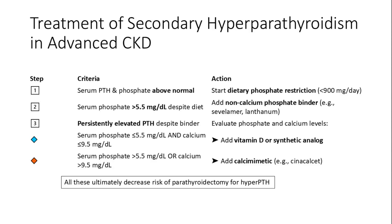In advanced CKD, patients can have secondary hyperparathyroidism, which presents with high PTH and high phosphate. It is managed by dietary phosphate restriction. If despite restriction phosphate is greater than 5.5, then we use non-calcium phosphate binders like sevelamer and lanthanum.